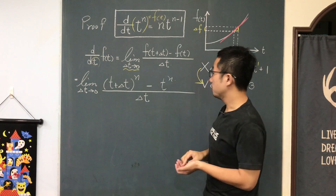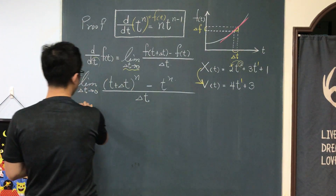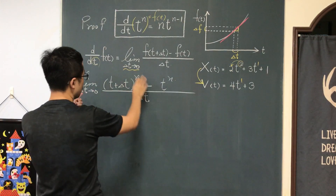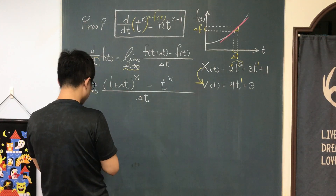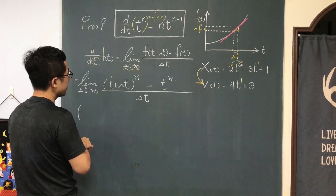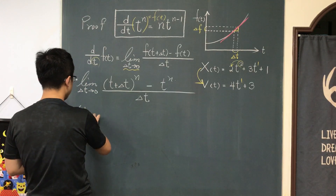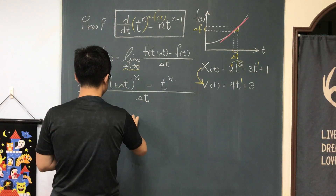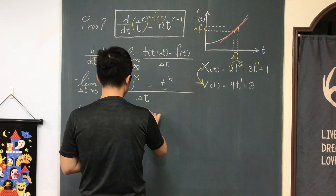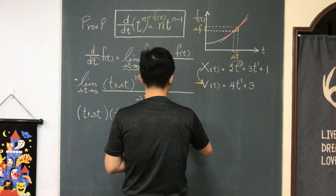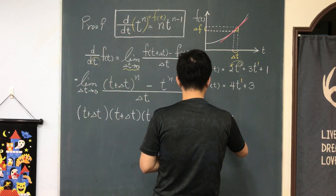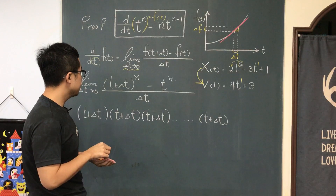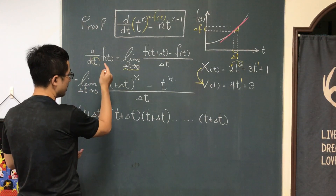Let's see if we can expand it using the binomial theorem. We can write (t + Δt)ⁿ as (t + Δt) times (t + Δt) times (t + Δt), continuing with n terms in total. The first term is going to be tⁿ — I can select t from each of the n terms.